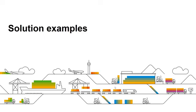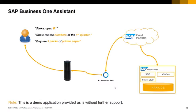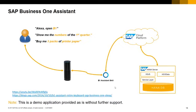Let's have a look at some solutions we have built on top of the SAP Business One Service Layer. The SAP Business One Assistant solution shows the Amazon Alexa device making voice-activated requests to SAP Business One. Based on the request received, data will be retrieved and transactions will be posted to SAP Business One via Service Layer. For example, when we say 'buy me three packs of printer paper' to Alexa, a new sales order will be created automatically in Business One via the Service Layer. Please note that this is a demo solution provided as-is without further support. For more details, please check the SAP Community blog provided on this page.